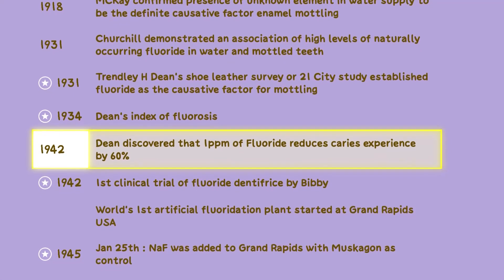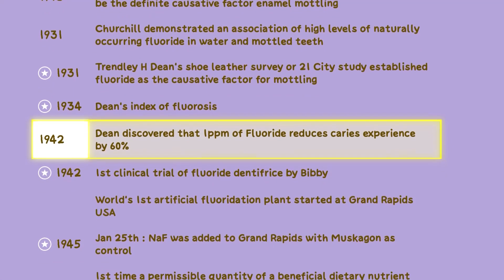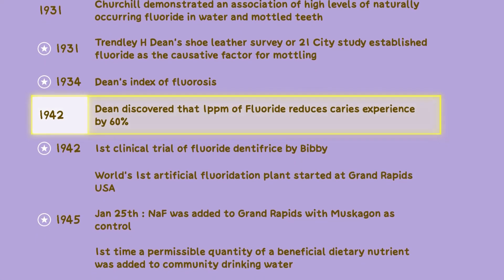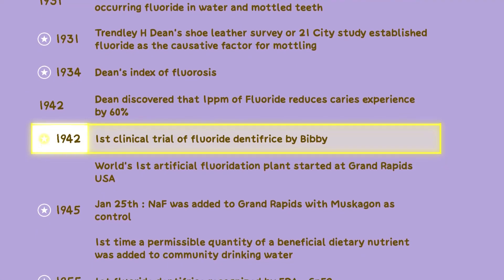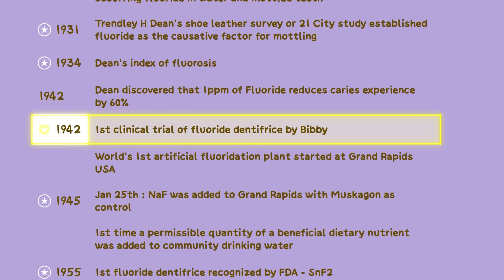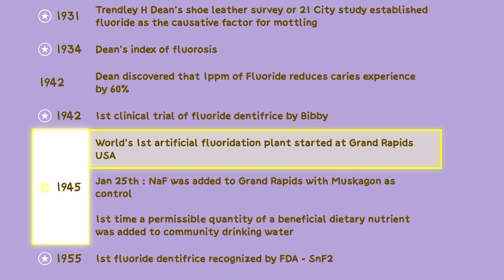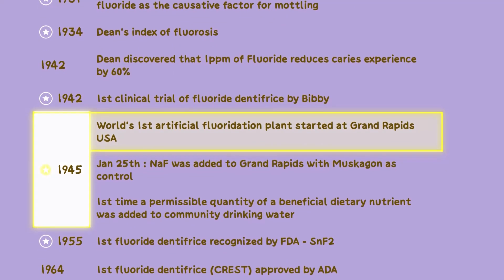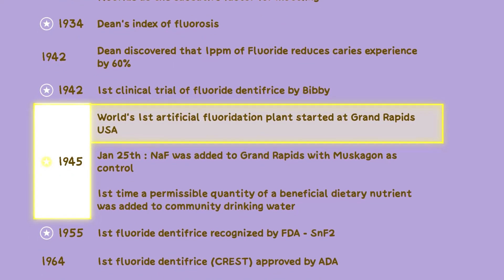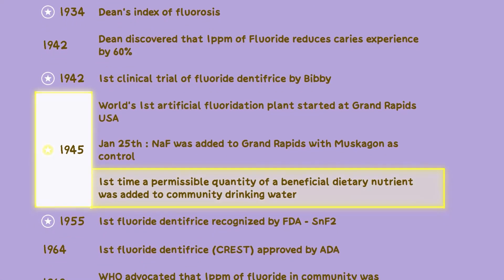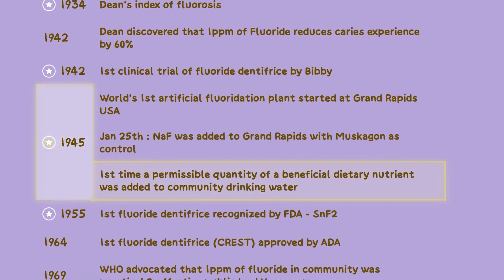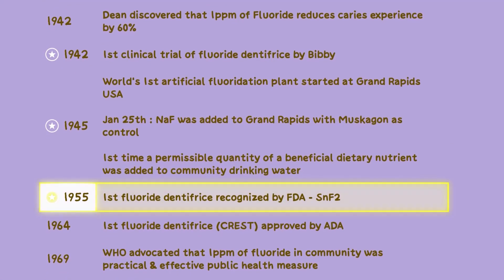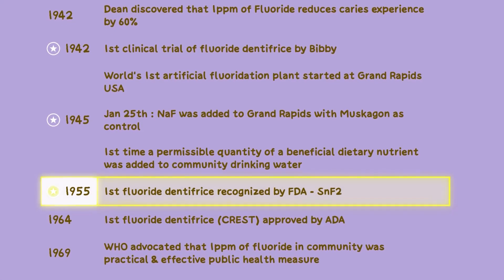In 1942, Dean discovered that one part per million of fluoride in water reduces caries experience by 60%. The same year, the first clinical trial of fluoride dentifrice was conducted by Bibi. In 1945, the world's first artificial fluoridation plant was established in Grand Rapids, USA — the first time a permissible quantity of a beneficial dietary nutrient was added to community drinking water. In 1955, the first fluoride dentifrice was recognized by the FDA.